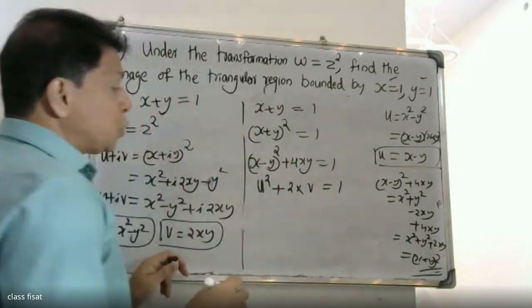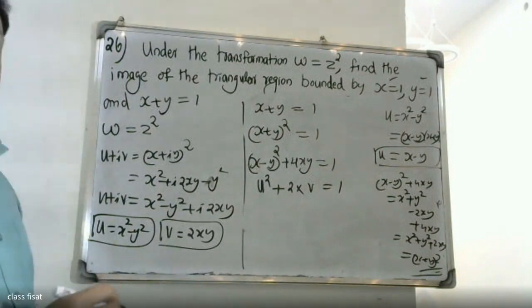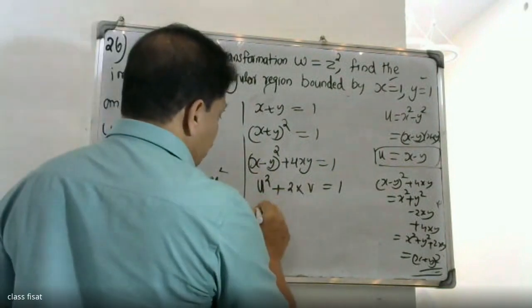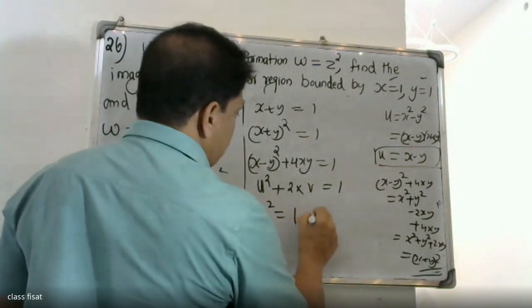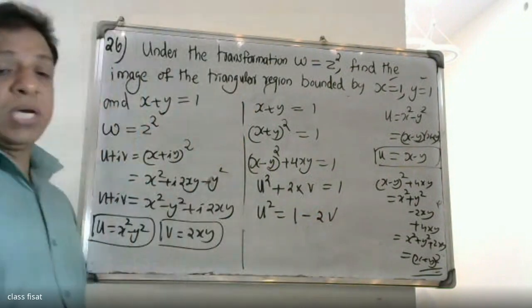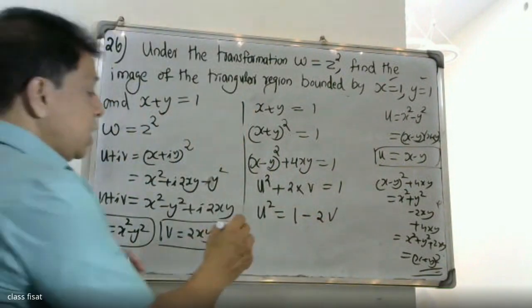So u squared plus 2v equals 1, giving u squared equal to 1 minus 2v. This is the image of the line x plus y equal to 1 in the w-plane.